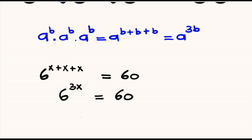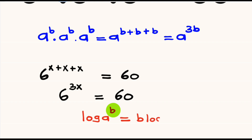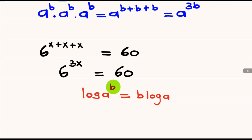So we have a logarithmic law that states that if we have the log of a raised to the power b, the b from the exponent will become the coefficient of the logarithm. So we have b multiplied by log a.